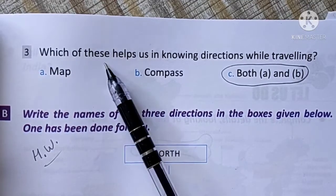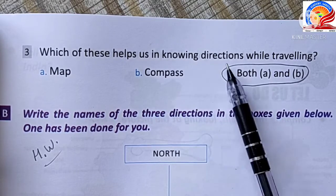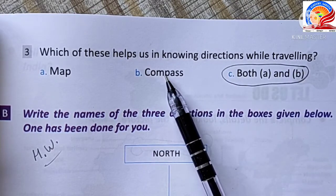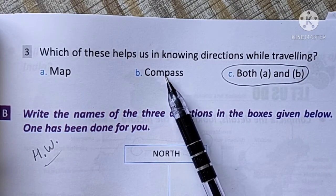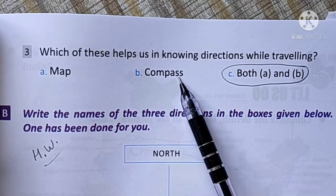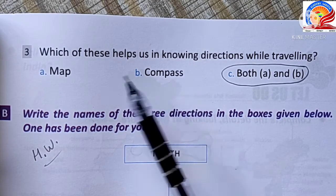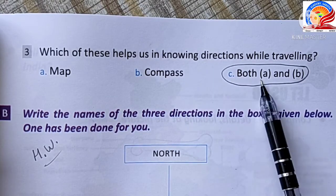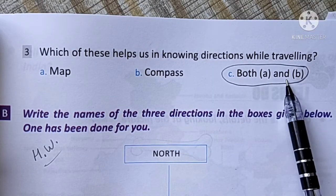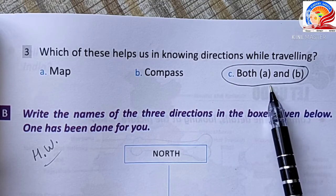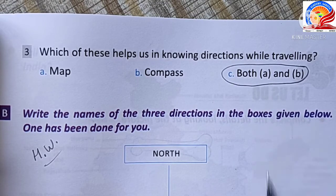Which of these helps us in knowing direction while traveling? Options: map, compass, both A and B. Both map and compass help us find directions while traveling. The answer is both A and B.